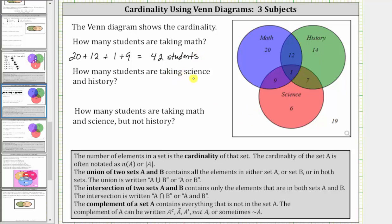Next, how many students are taking science and history? Here we have the set of students taking science. Here we have the set of students taking history. We're looking for the number of students taking science and history, which is the intersection of these two sets, which is this set here.